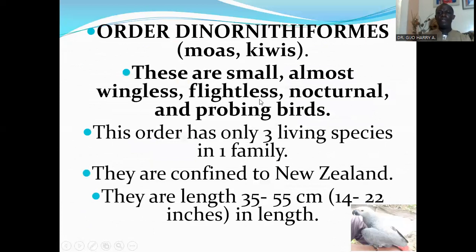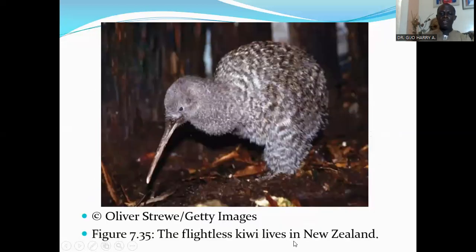The next order is Order Apterygiformes, which consists of the kiwis. These are small, almost wingless, flightless, nocturnal, and probing birds. Their wings are very small, they don't fly, they are active at night, and they are probing birds. This order has only three living species in one family, confined to New Zealand. Their length is 35 to 55 centimeters. Here is the flightless kiwi, which lives in New Zealand.